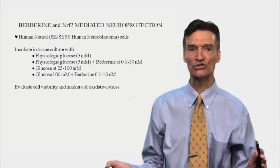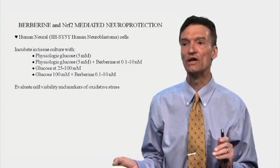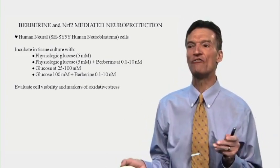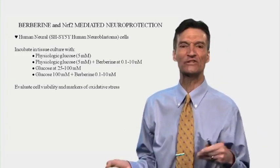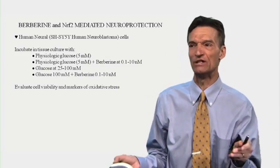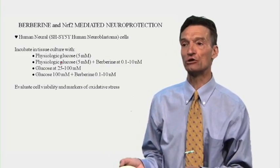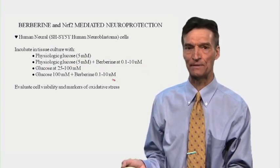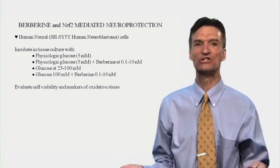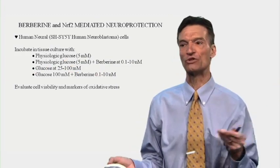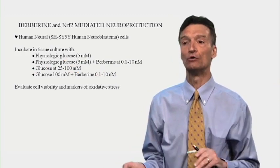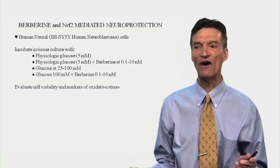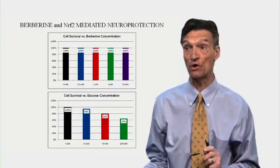We're going to do a cell culture study with human neural cells. We're going to incubate them in tissue culture with physiologic glucose — 5 millimolar, a normal blood sugar — or physiologic glucose with increasing dose of berberine, or pathological hyperglycemia mimicking severe diabetes with or without concomitant berberine treatment. We look at effects on cell viability and markers of oxidative stress.